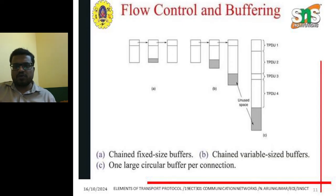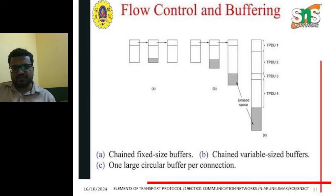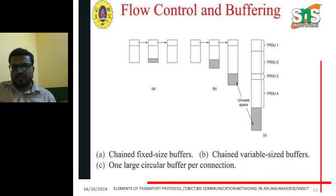Flow Control and Buffering: flow control uses a first-in first-out (FIFO) model. Once data is received at the destination, it is processed based on FIFO. If there is a priority, data is forwarded to the destination based on that priority; otherwise, data flows to the next level.